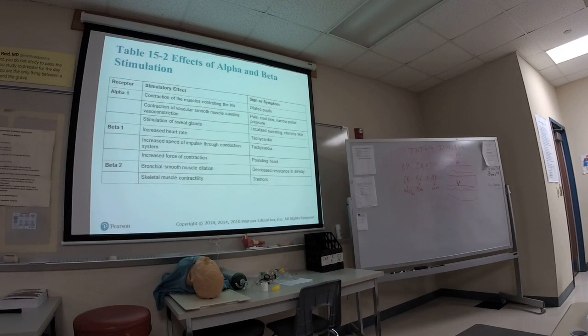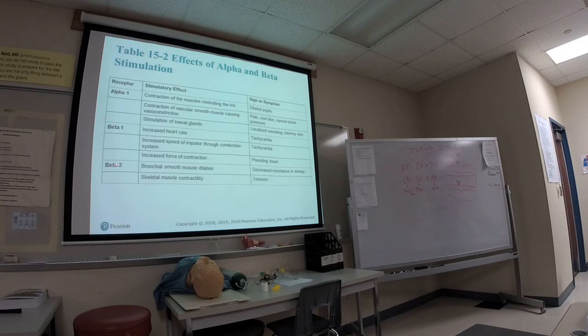The different receptor responses: alpha causes vasoconstriction; beta-1 — one heart — deals with heart rate; beta-2 — two lungs — causes bronchodilation. Epinephrine has all three properties: alpha (vasoconstriction), beta-1 (increased heart rate), and beta-2 (bronchodilation).